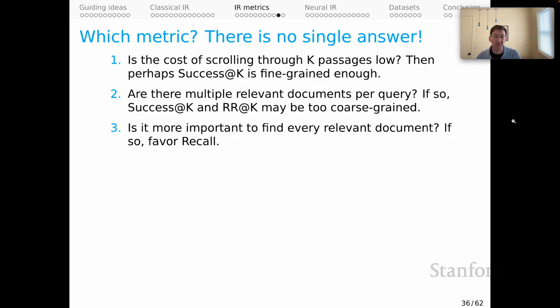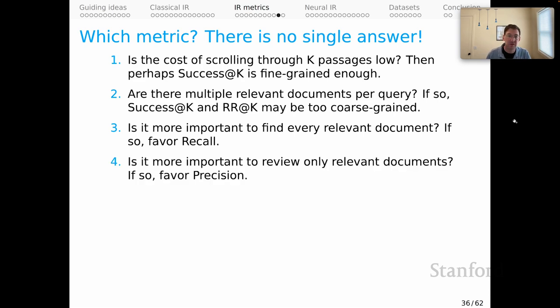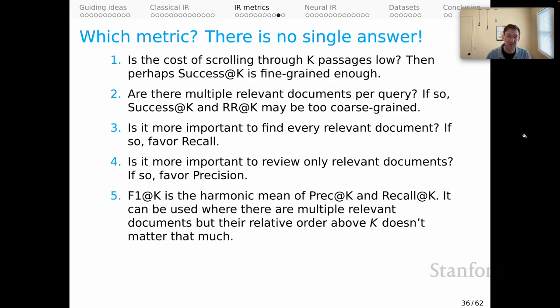Is it more important to find every relevant document? If so, favor recall. Is it more important to review only relevant documents? If so, favor precision. This would be a case where the cost of missing something is high, but the cost of review is low. Down here, maybe the cost of review could be high, but we don't really pay too much if we miss things. We just need to find a few relevant exemplars, and so we can favor precision in that case.